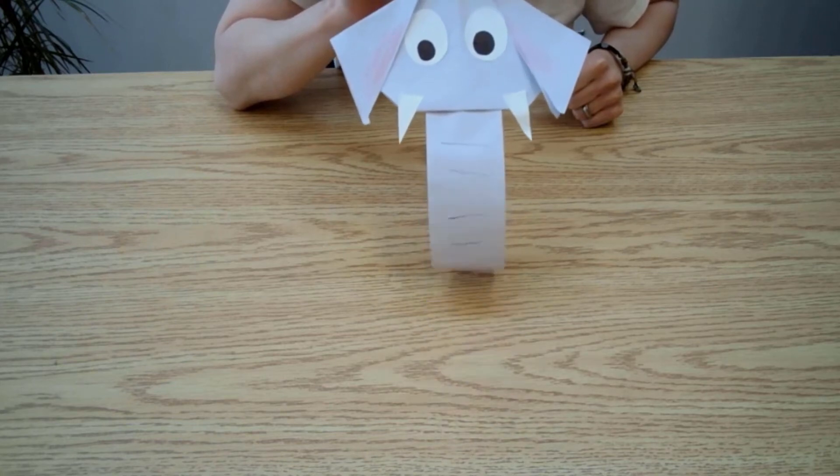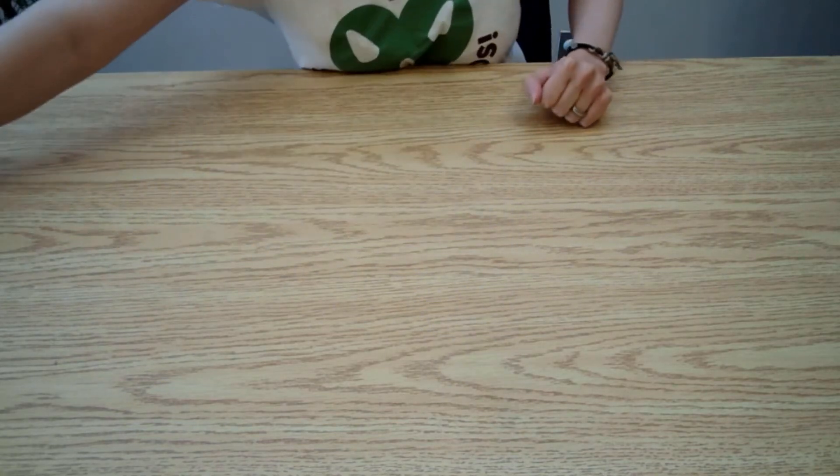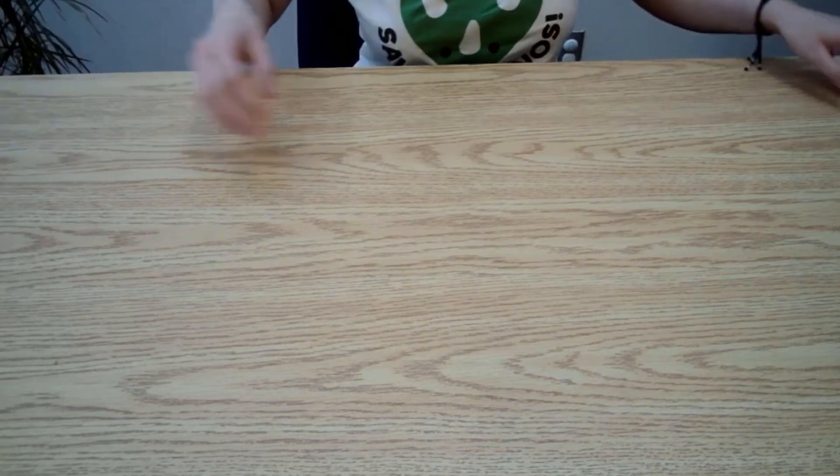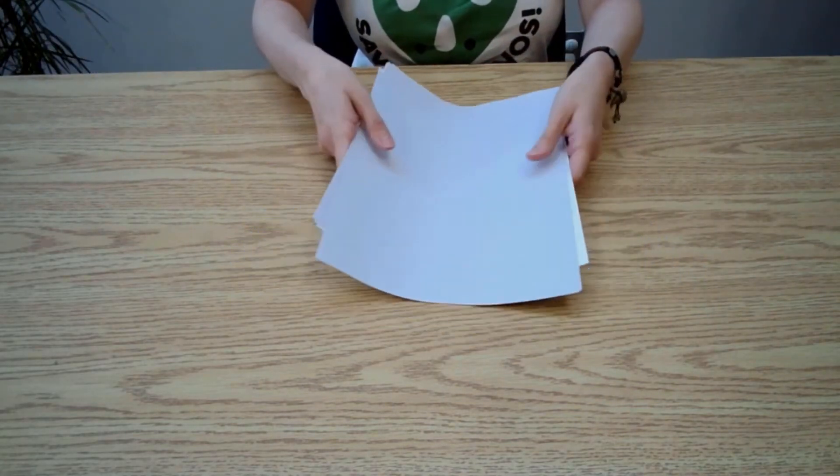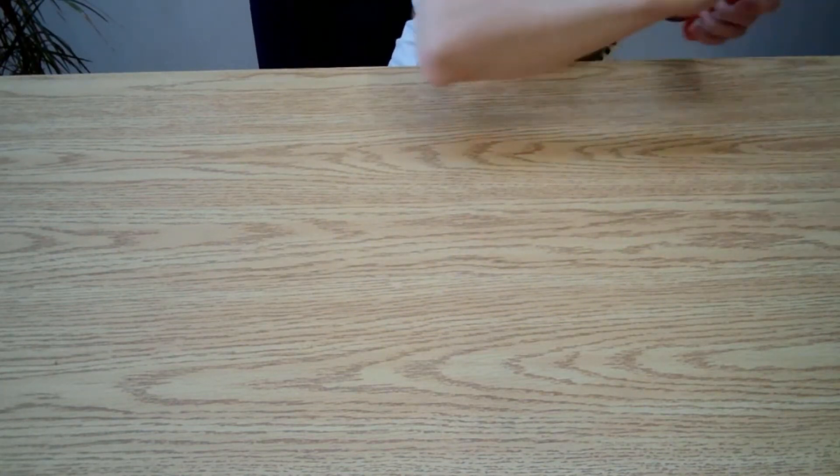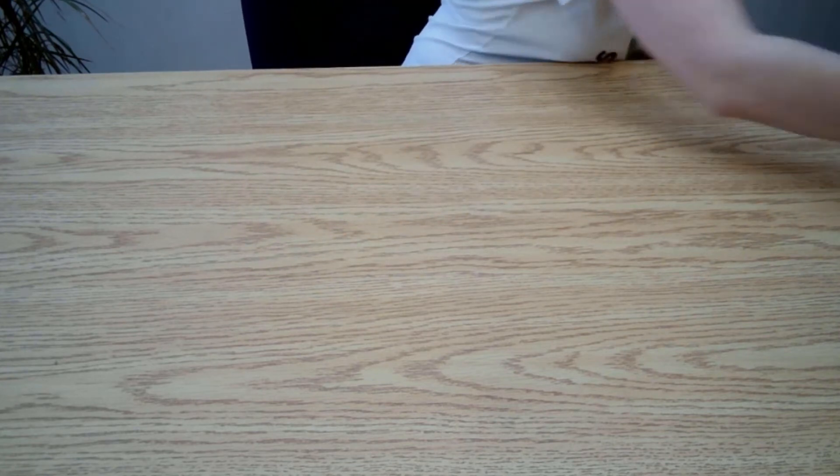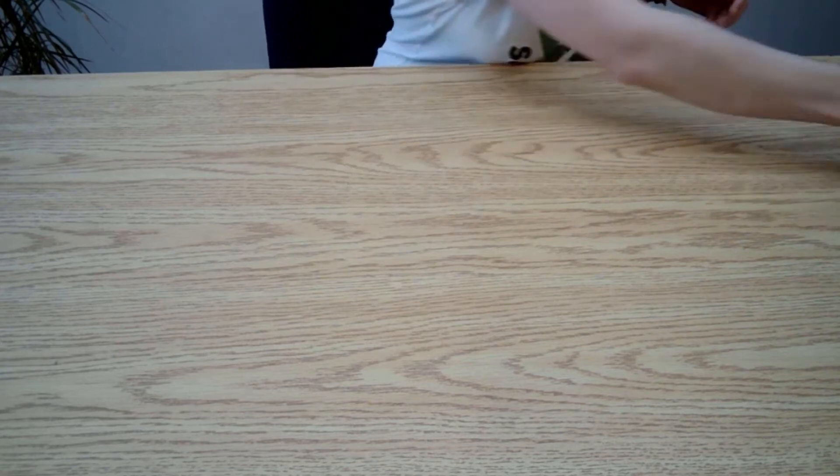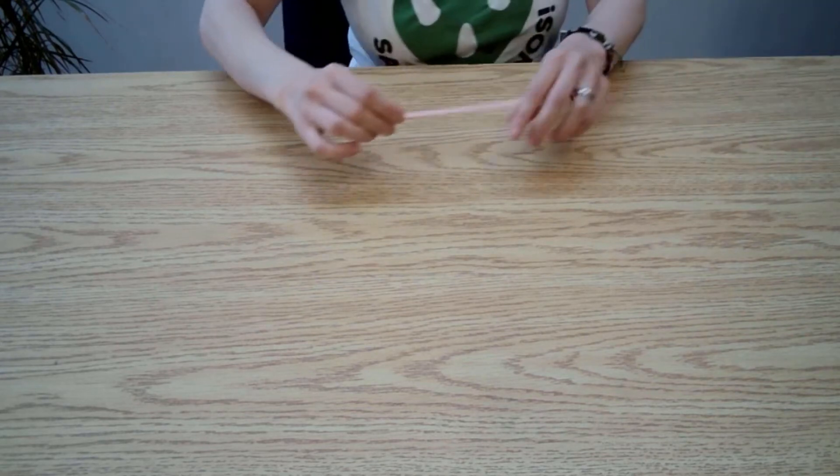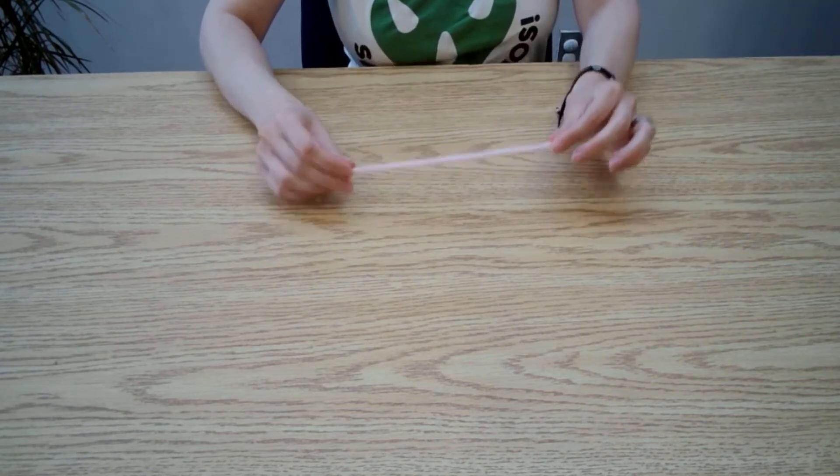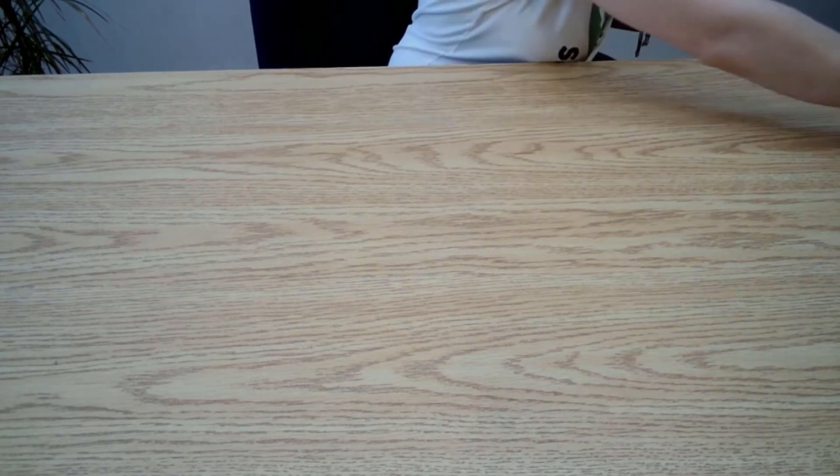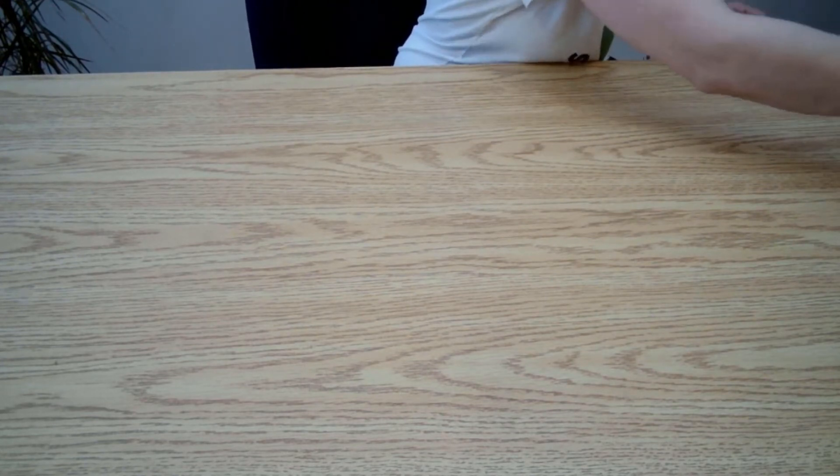Today I'm gonna show you how to make an elephant out of paper. For this craft you will need some scrap paper, scissors, glue stick, a straw, and some coloring materials like crayons or markers.